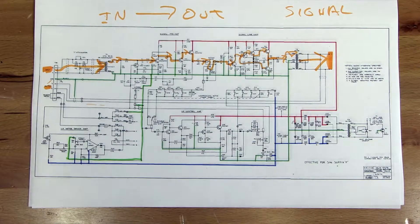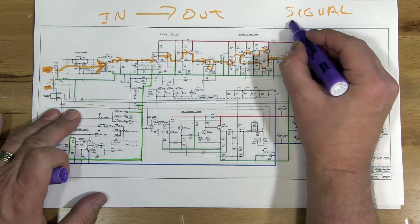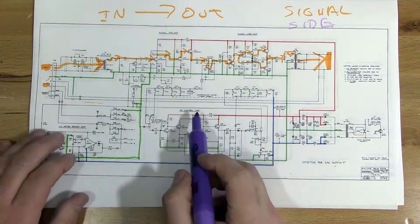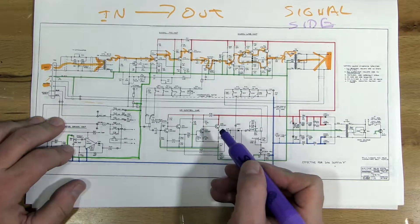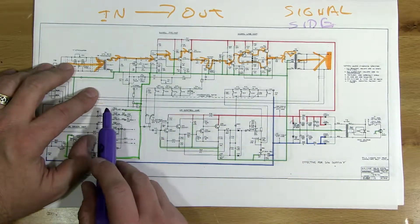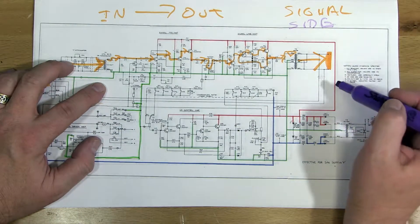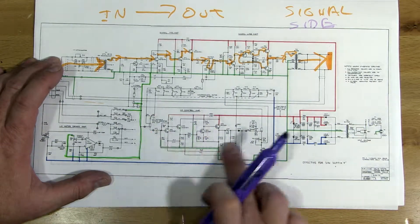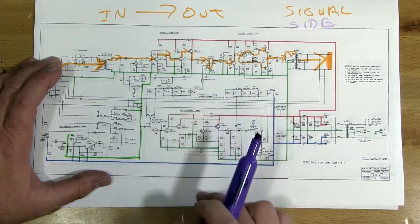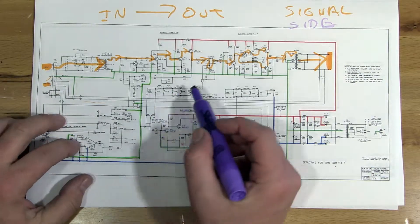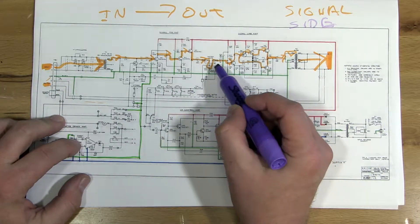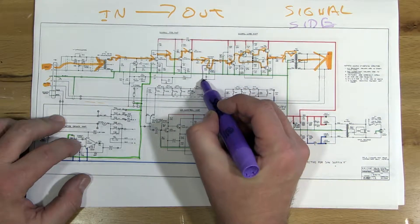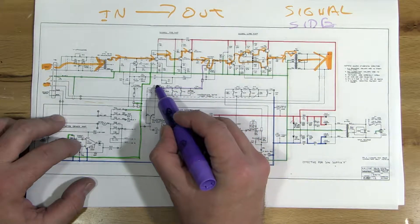So I'll go ahead and use purple now to do my sidechain. In this case, they call it sidechain gain reduction control amp. So one of the things we see is that there is a feed down to this gain reduction control amp that comes from right here. So before the output level control, the signal splits off, comes down, goes through this resistor network.